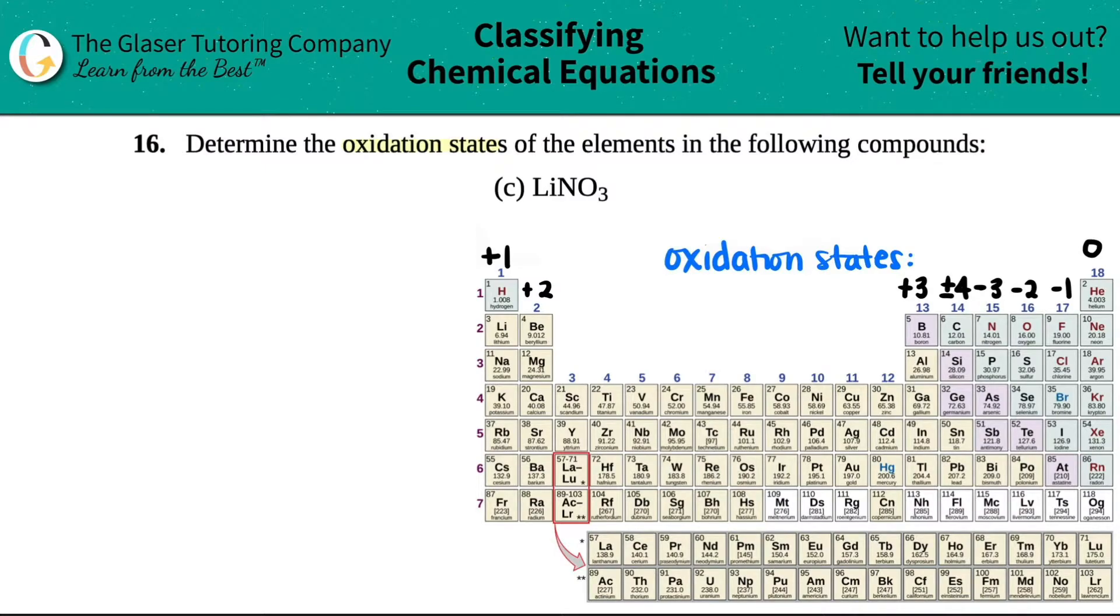So what I'm going to do is I'm just going to rewrite it over here, LiNO3. And just a quick couple of things. I went through the full-blown analysis of oxidation states in number 16A. So if you want, you could go to the end of this video, click the playlist, and go to 16A. That will give you the full rundown. But now we're just going to talk about how to find these oxidation states.